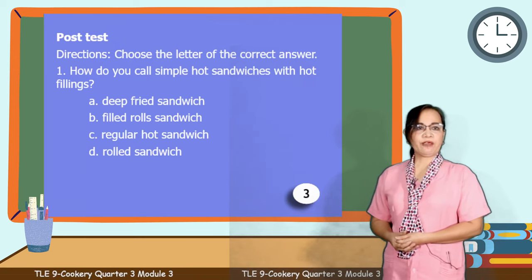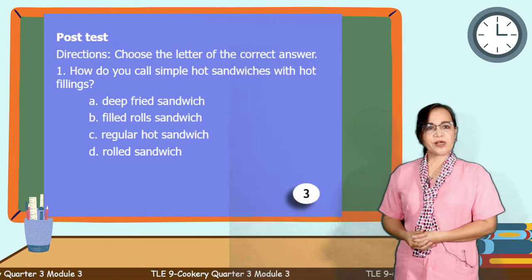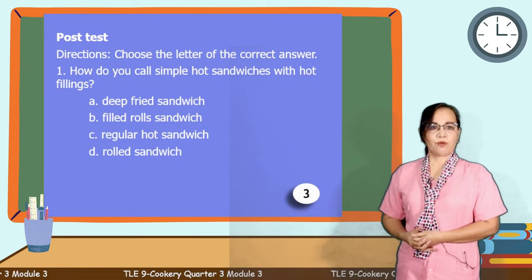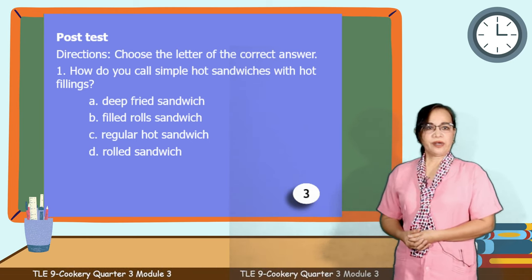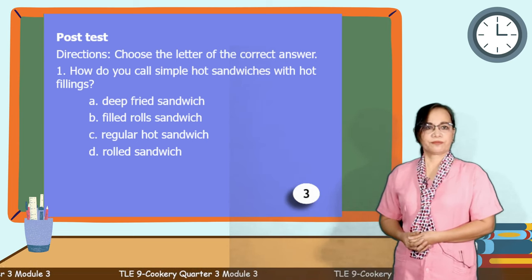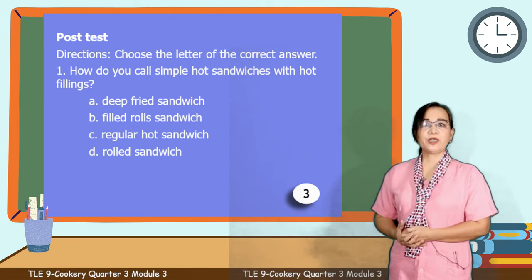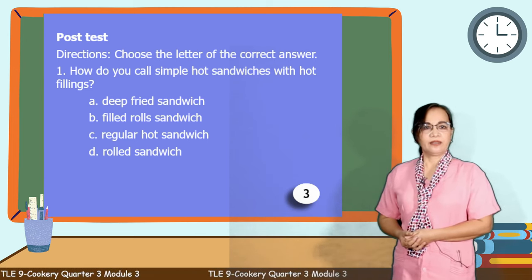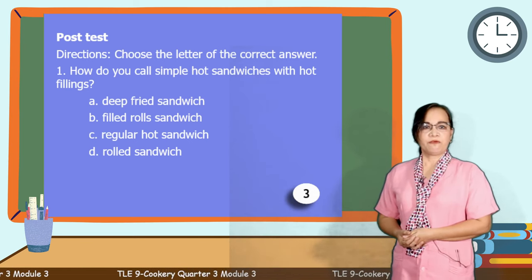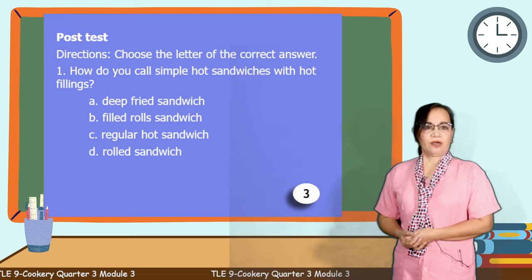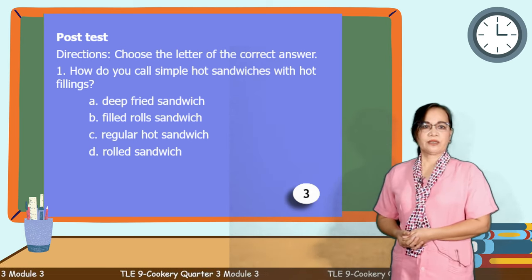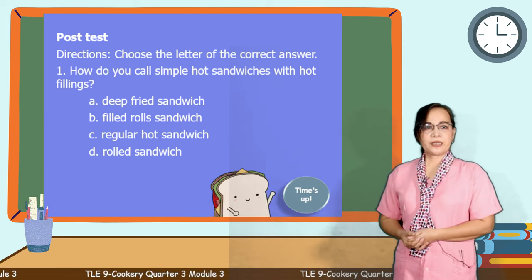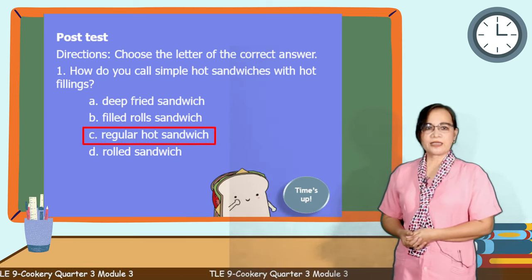To evaluate your level of mastery for today's topic, answer each question. Please write your answer in the comment section below. Question number 1: How do you call simple hot sandwiches? Is it letter A, deep-fried sandwich? B, filled roll sandwich? C, regular hot sandwich? Or letter D, rolled sandwich? Time starts now. Time's up. It's letter C, regular hot sandwich. You are correct.